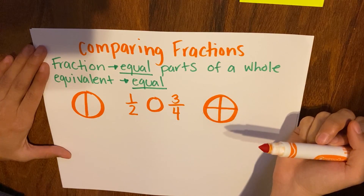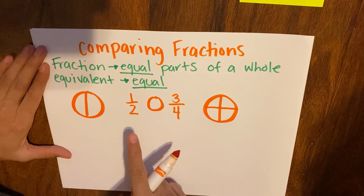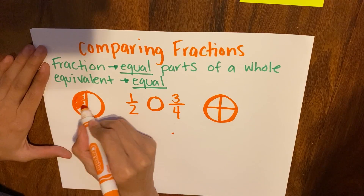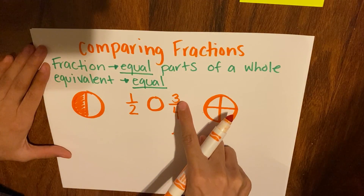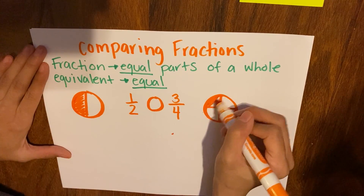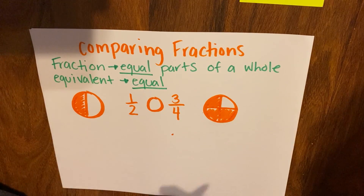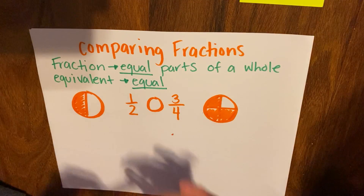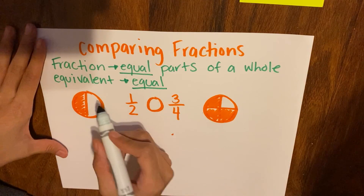Now we have our numerator and our denominator. Our numerator will always tell us how much I have shaded in. So for 1 half, I have 1 shaded in. For 3 fourths, I will have 3 shaded in: 1, 2, 3. Now, just looking at my fraction circles, I can pretty much see which one is greater than the other — which one has more shaded in.